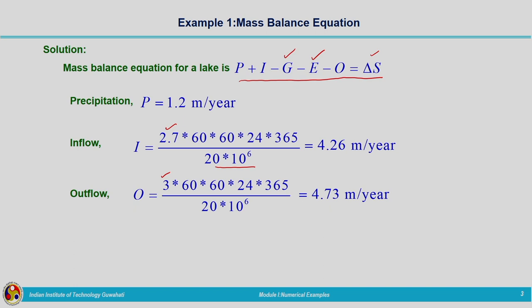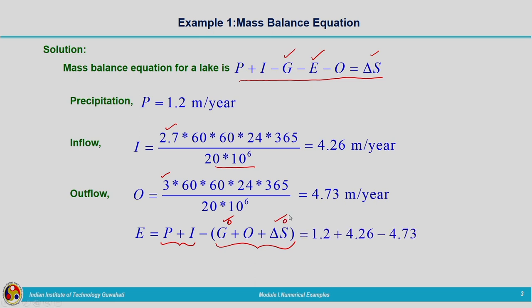We substitute these values into the mass balance equation. P plus I together represent inflow and E and O represent losses. With P = 1.2 m/yr, I = 4.26 m/yr, and O = 4.73 m/yr, and setting G and ΔS to zero, we can calculate evaporation from the lake as 0.73 metres per year. Similarly, by using the mass balance equation we can calculate infiltration, evaporation, or groundwater seepage depending on the values given.